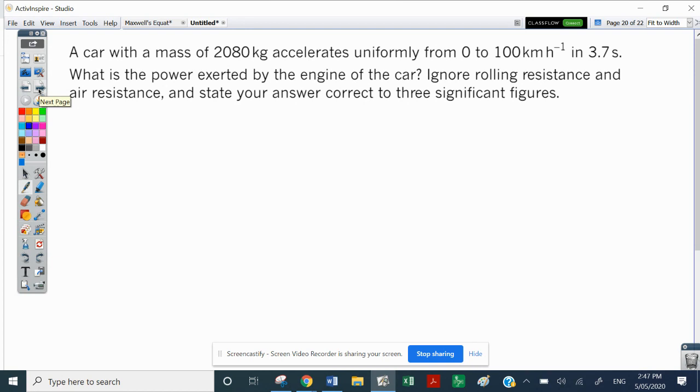A car, this is another one from the textbook, a car with mass of 2080 kilograms accelerates uniformly from zero to 100 kilometers per hour in 3.7 seconds. What is the power exerted by the engine of the car? And we're going to ignore all resistances. So this time here, we have to ask ourselves, when we do our power, is it going to be this delta E, is it a change of kinetic energy, or is it a change of gravitational potential energy?